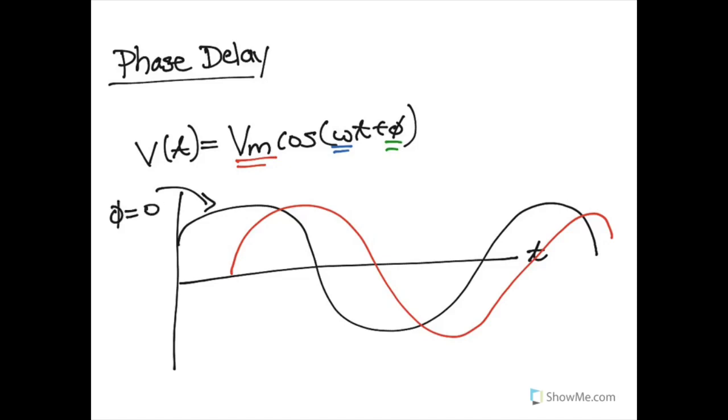we might say that its phase delay is zero as it's our base wave. But for this other wave that comes along, because it's behind, it's later in time than our black wave.